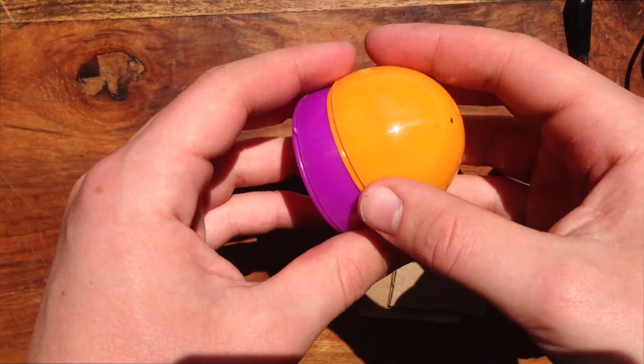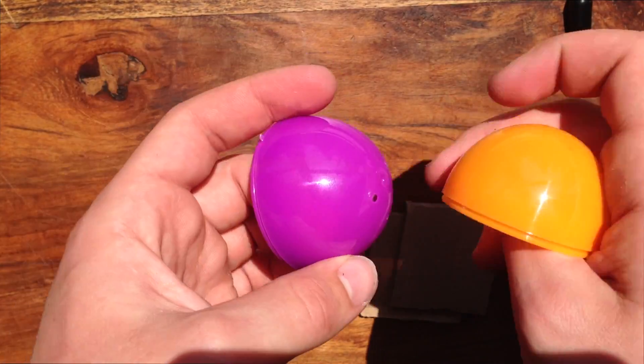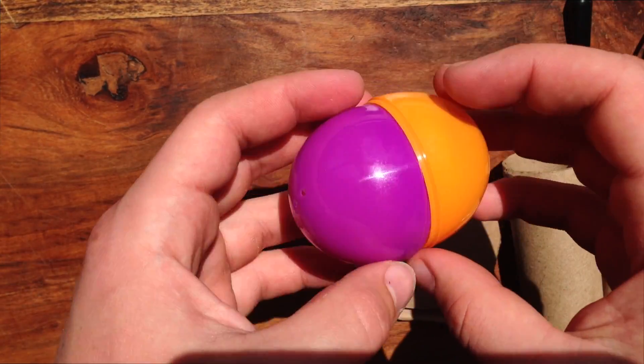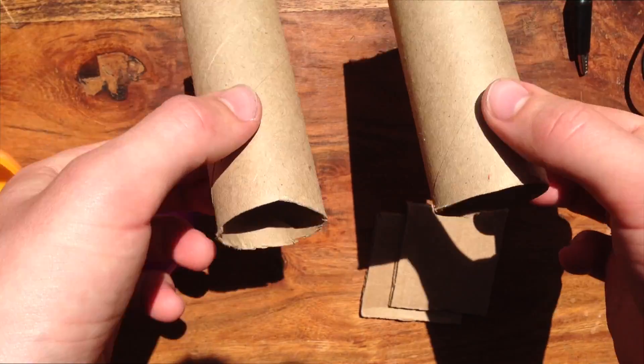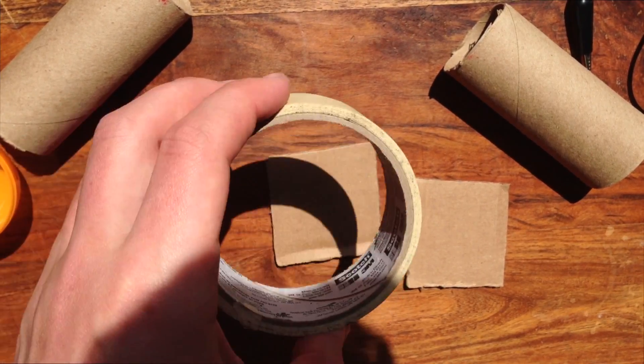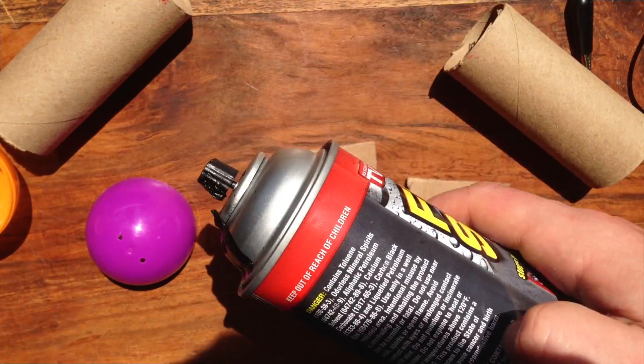You're also going to need two spherical objects. I'm using two Easter egg tops, but a wiffle ball cut in half would work as well. Also, two toilet paper tubes, two 2-inch by 2-inch pieces of cardboard, and lastly, some tape, and also I'm using some liquid rubber.